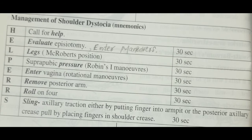In HELPERR we have eight alphabets: H, E, L, P, E, R, R, S. H stands for 'Call for Help' — like any emergency, we have to call for help. After that, E comes: E means 'Evaluate episiotomy' — both evaluate and episiotomy start with E. After that, 'Enter maneuvers' — so evaluate episiotomy and enter maneuvers all start with E.